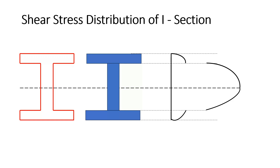Now, what will happen at the junction of flange and web? The width of the section is getting decreased. At the flange level, the width equals the width of the flange, but at the web level, the width equals the width of the web — much less. So as you travel from flange to web, the width of the section decreases. What will happen to the shear stress distribution?